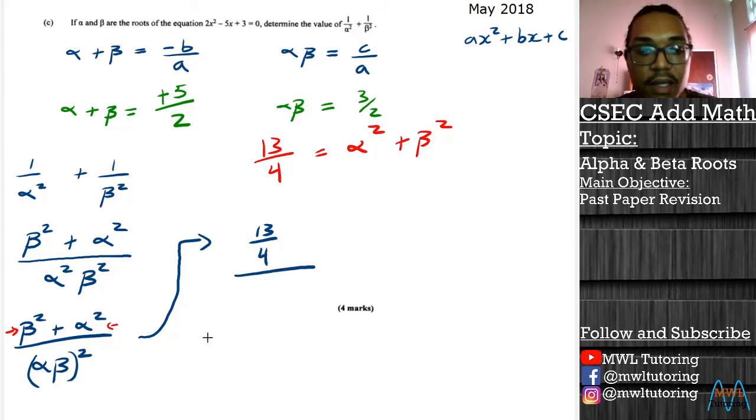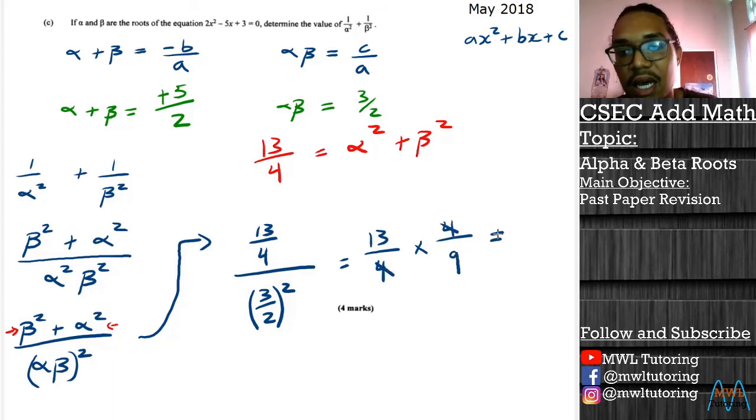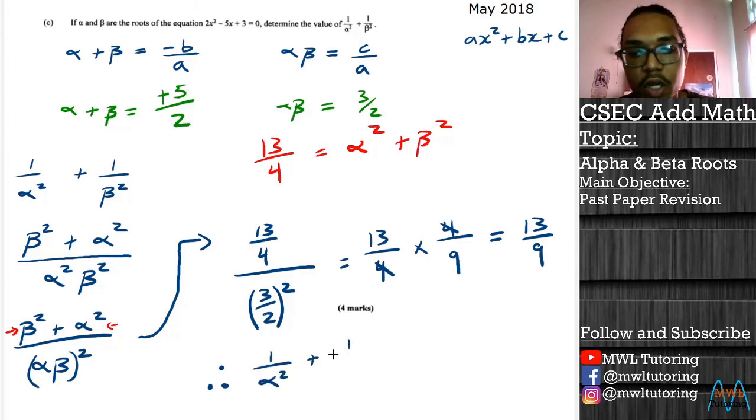So we now know the value of beta squared plus alpha squared is 13 over 4, and that is being divided by the product 3 over 2 and we're squaring that. So that would be 13 over 4, and if we divide by fractions we multiply by the inverse 4 over 9. The fours cancel and we end up with 13 over 9 as our answer. Therefore, 1 over alpha squared plus 1 over beta squared is equal to 13 over 9.